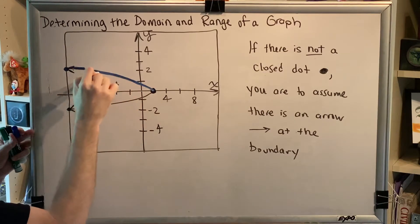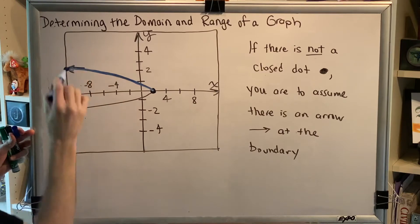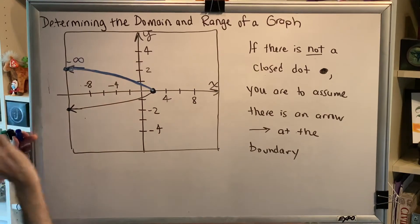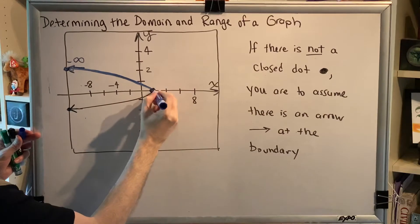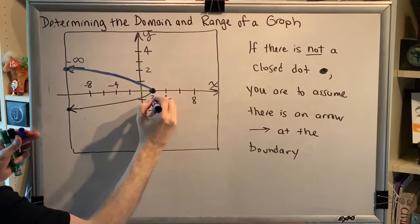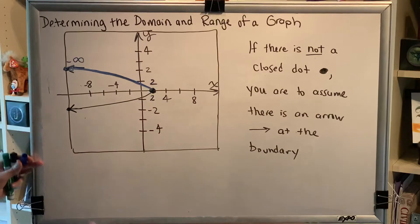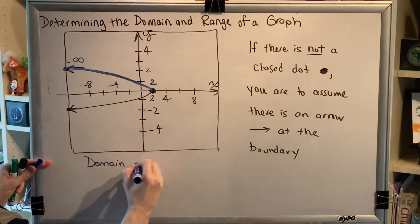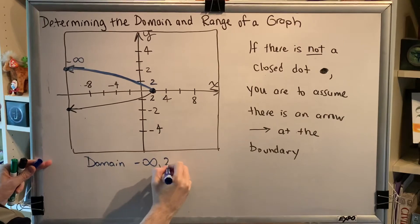Therefore, we can write our domain by simply stating the x-coordinate of the leftmost point, which would be negative infinity, and the x-coordinate of the rightmost point, which would be 2, and writing that as an interval.